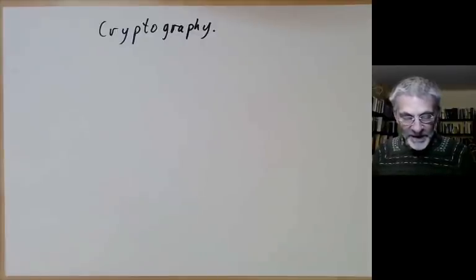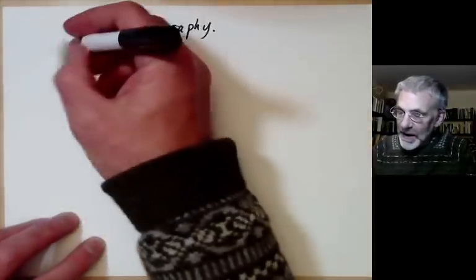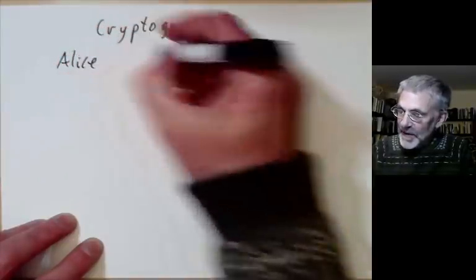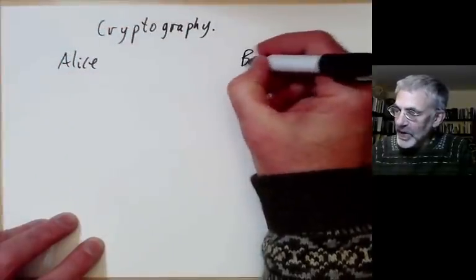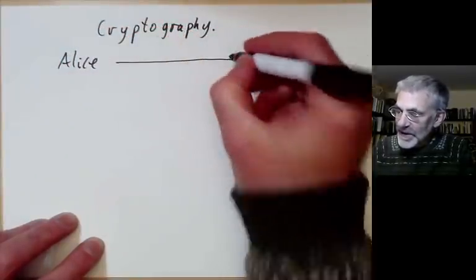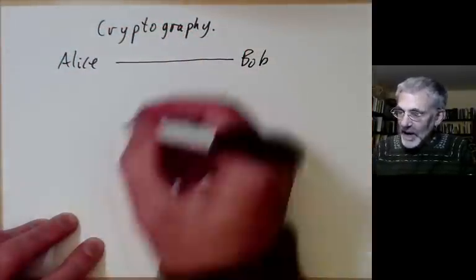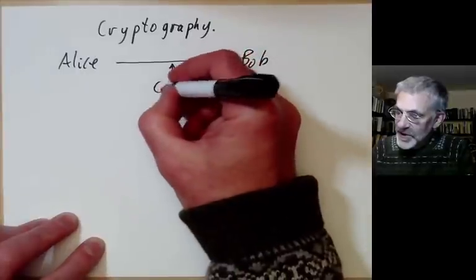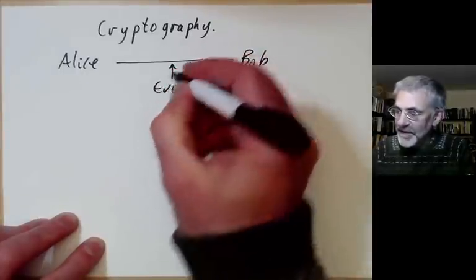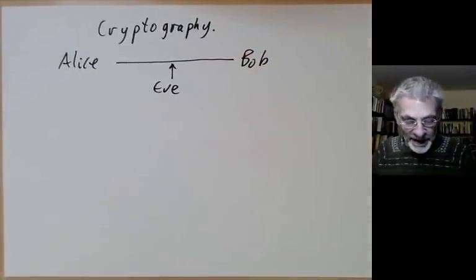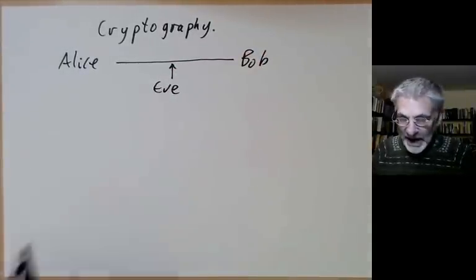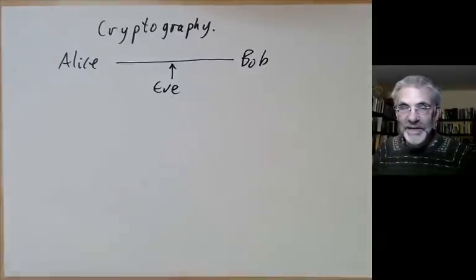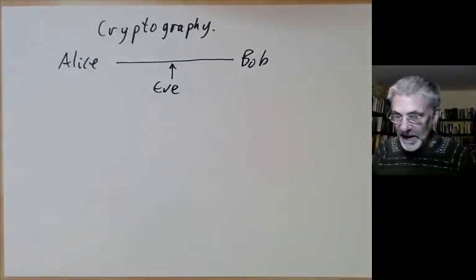I'll give a bit of background. The main problem is we have two people traditionally called Alice and Bob who are communicating with each other, and someone is intercepting their messages, traditionally called Eve — which is short for eavesdropper. Alice and Bob wish to communicate without Eve figuring out what they're saying.